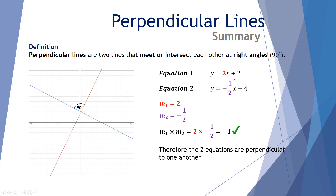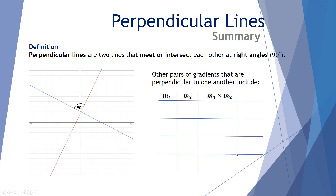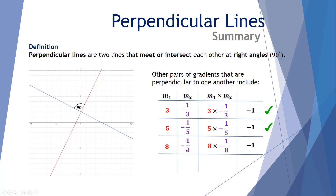Some examples of other pairs of gradients that are perpendicular: if m1 equals 3 and m2 equals negative 1 third, their product is negative 1; if m1 equals 5 and m2 equals negative 1 fifth, product is negative 1; if m1 equals 8 and m2 equals negative 1 eighth, product is negative 1. Finally, if m1 equals 2 thirds and m2 equals negative 3 halves (the negative reciprocal), multiplying gives negative 1. All these pairs are perpendicular.